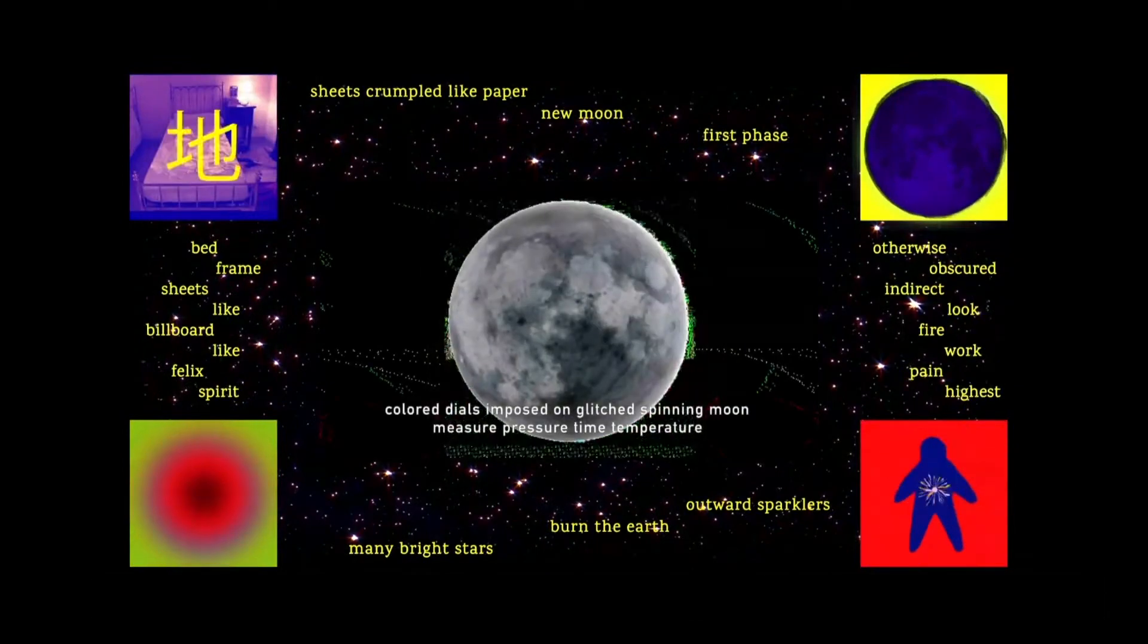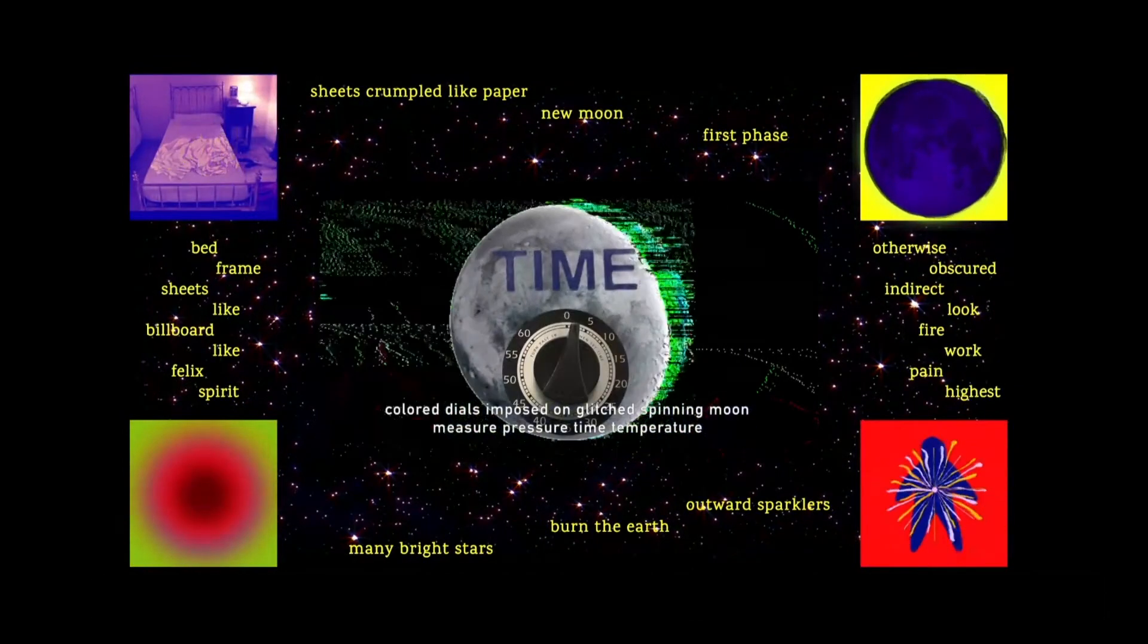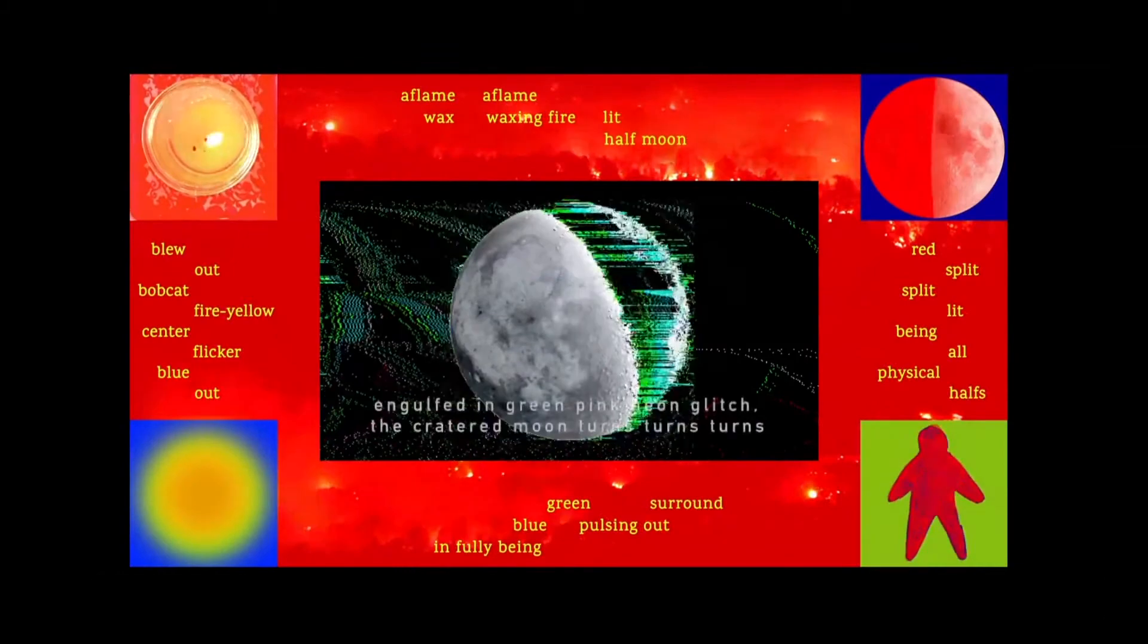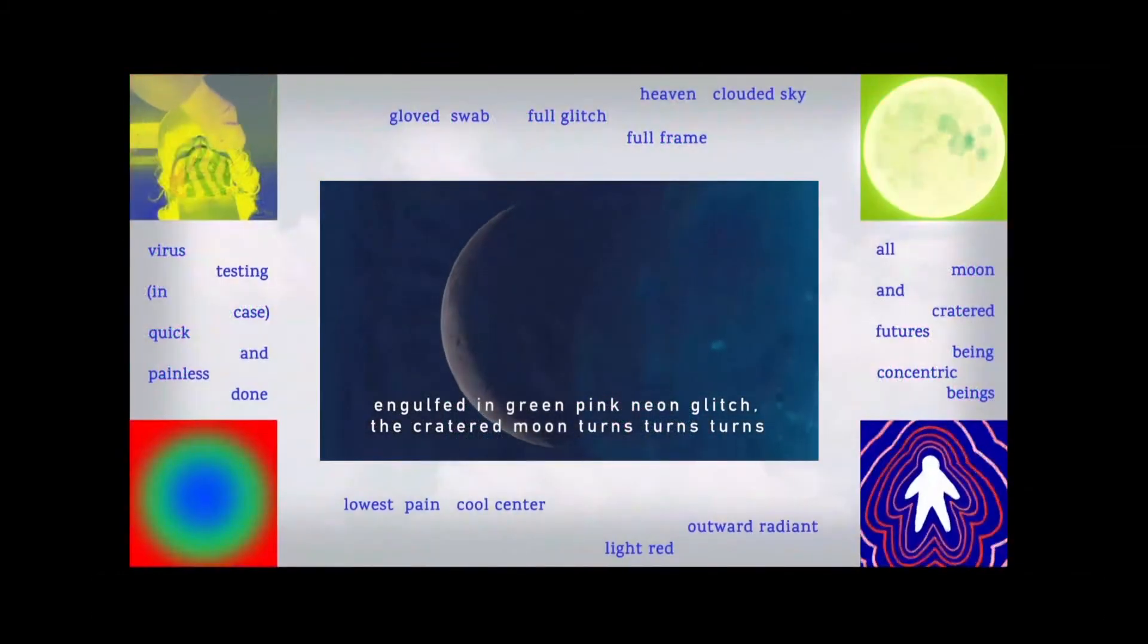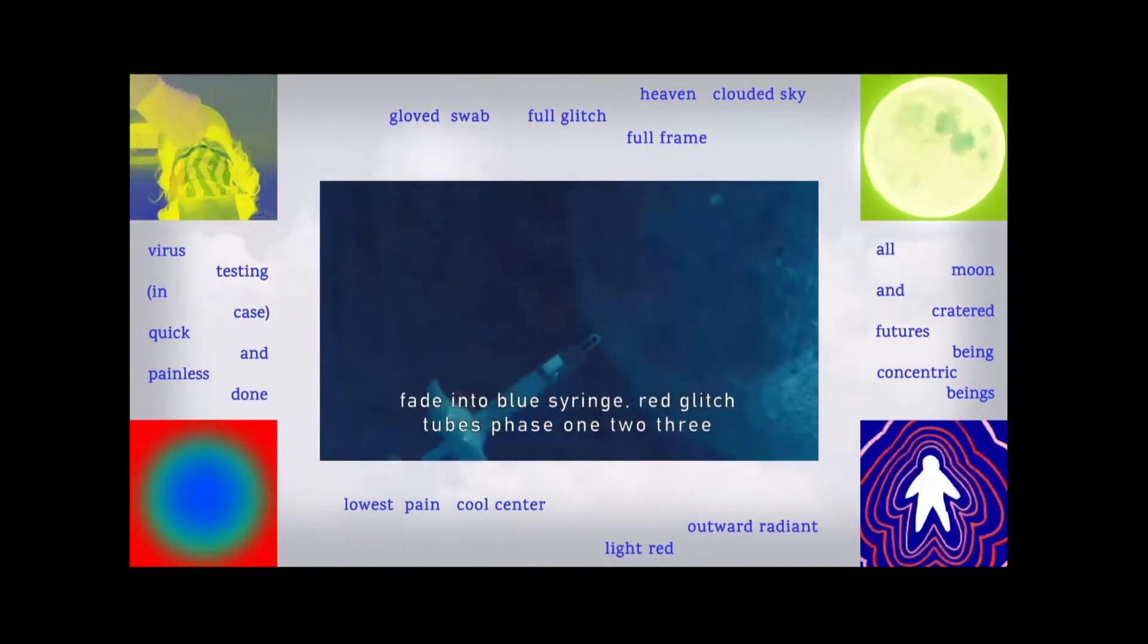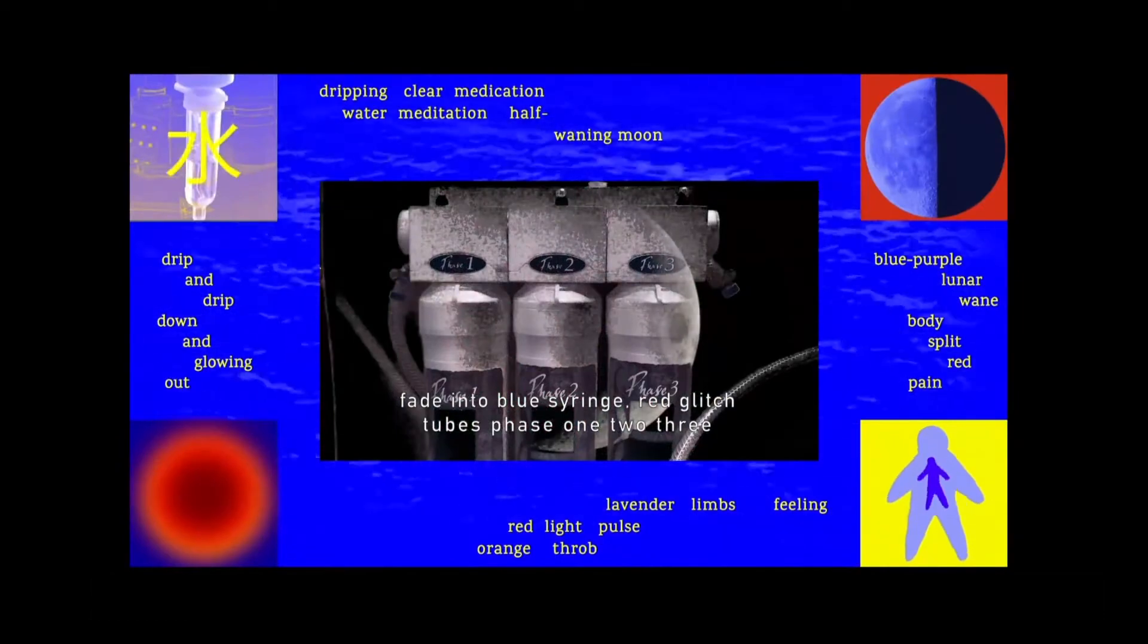Colored dials and pose on glitched spinning moon. Measure pressure, time, temperature. Engulfed in green, pink, neon glitch. The cratered moon turns, turns, turns. Fade into blue syringe. Red glitch. Tubes, phase 1, 2, 3.